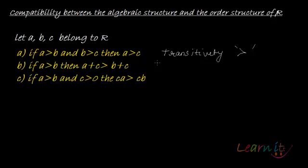If A is greater than B, then A plus C should be greater than B plus C. So if there is any number C — C can be positive, can be negative — any number C out there, if I add it to both LHS and RHS, it should not make any difference. The order should still be intact.